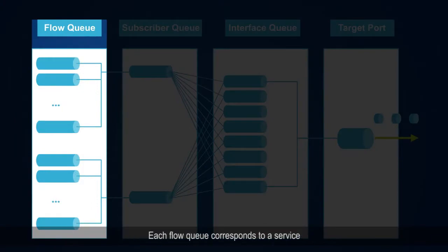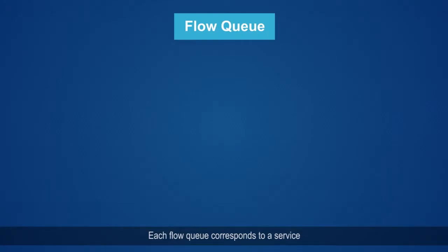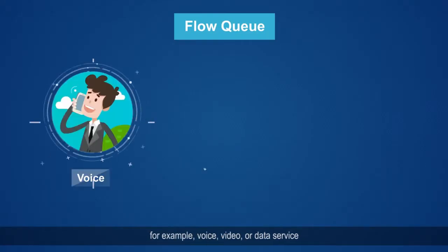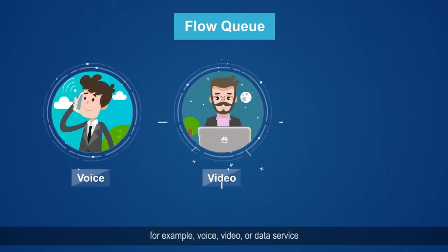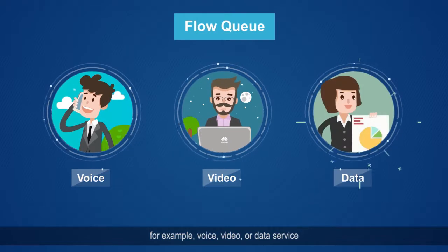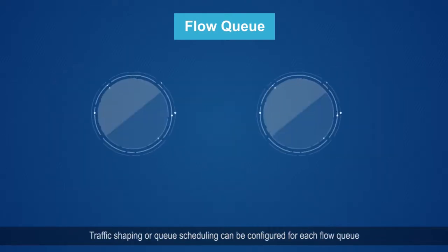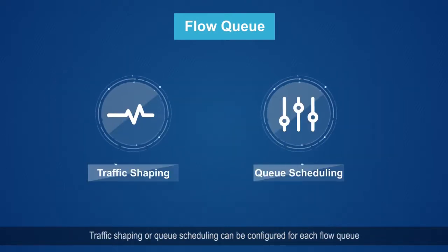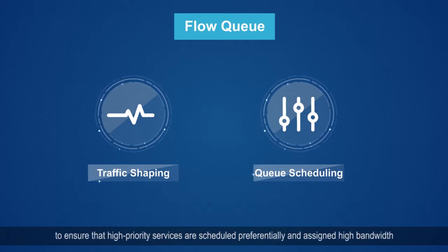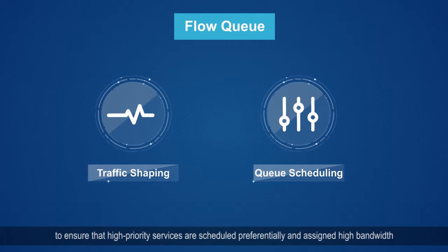Each flow queue corresponds to a service — for example, voice, video, or data service. Traffic shaping or queue scheduling can be configured for each flow queue to ensure that high-priority services are scheduled preferentially and assigned high bandwidth.